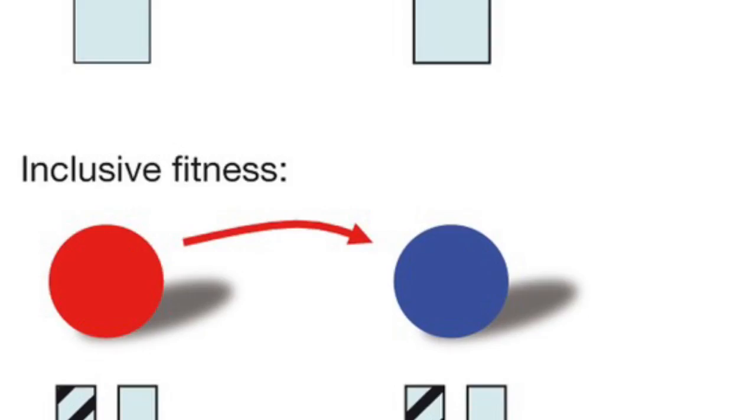What was Malthus's view of population growth? Malthus reasoned that if the human population grew unchecked, there wouldn't be enough living space and food for everyone. Fitness is how well an organism can survive and reproduce in its environment.